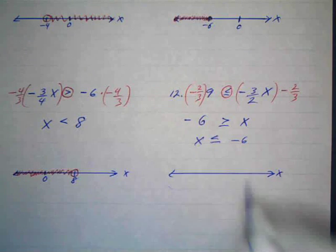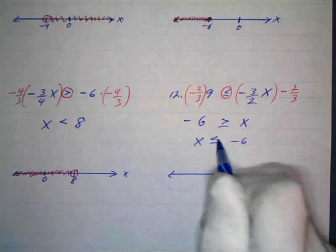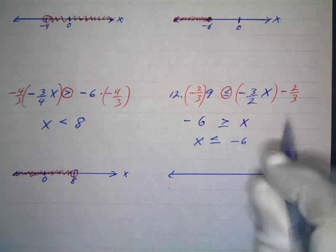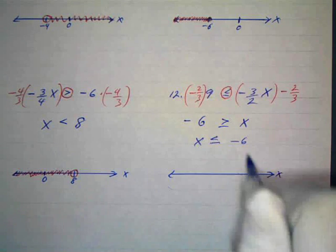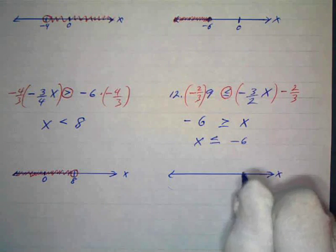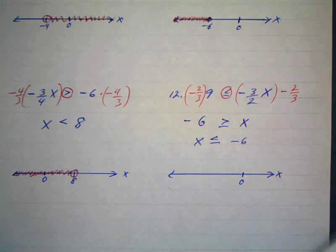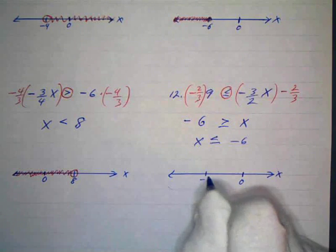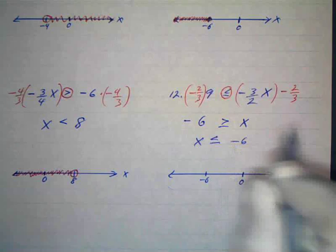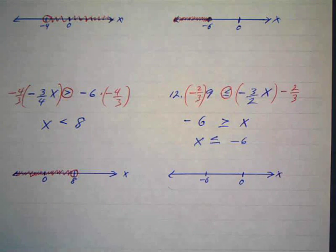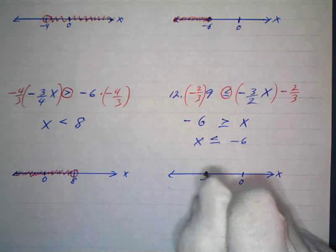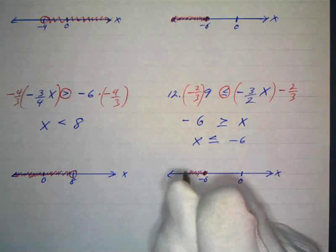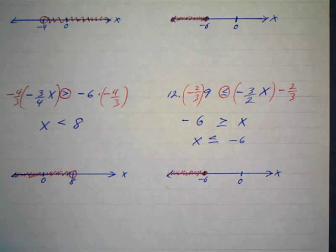I'll put 0 on the number line. Since I'm going to the left of negative 6, I'll put 0 over here and negative 6 to its left. This is the same solution as the earlier example — coincidentally. x is less than or equal to negative 6, so I put a solid dot at negative 6 and shade everything to the left, going all the way to the end of the line.